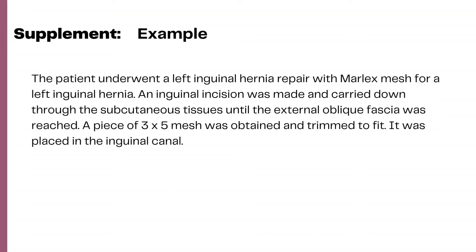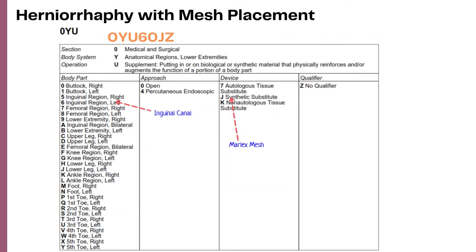When a procedure involves cavities or areas, those are always coded to anatomic regions as the body system values. For this example — placement of mesh in the inguinal canal — the section is Medical and Surgical, body system is Anatomic Regions, Lower Extremities (groin region), root operation is Supplement, body part is Inguinal Region Left, approach is Open, device is Synthetic Substitute (Marlex mesh is an artificial substitute), and the seventh character is Z for No Qualifier. The code is 0YU60JZ.